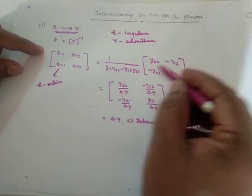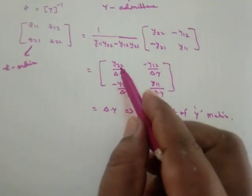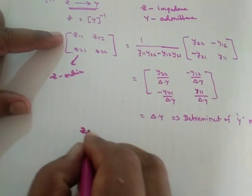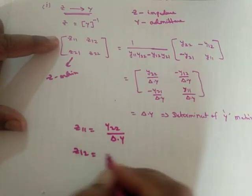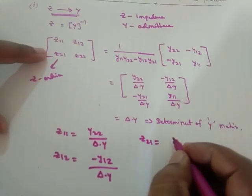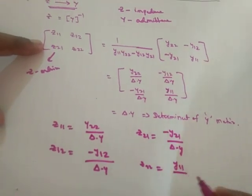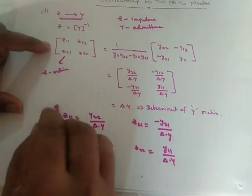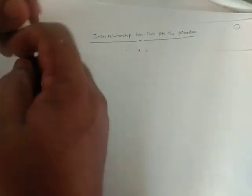This is the Z parameter matrix. Using matrix inverse — which gives 1 over (AD minus BC) times the adjugate — we can express Z parameters in terms of Y parameters. So Z11 equals Y22 by determinant of Y, and Z12 equals negative Y12 by determinant of Y. Like this we can express Z parameters in terms of Y parameters.